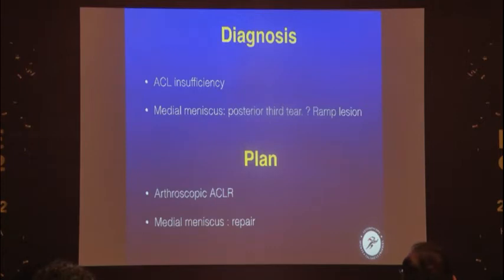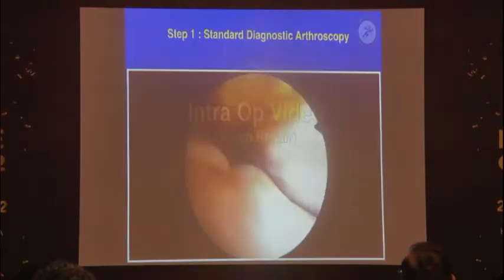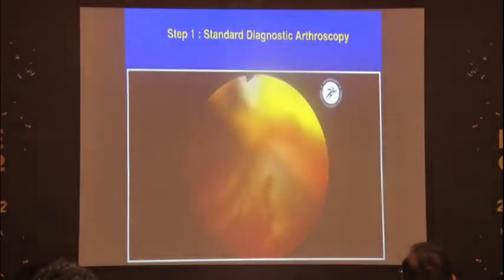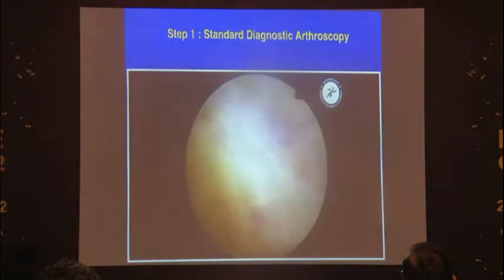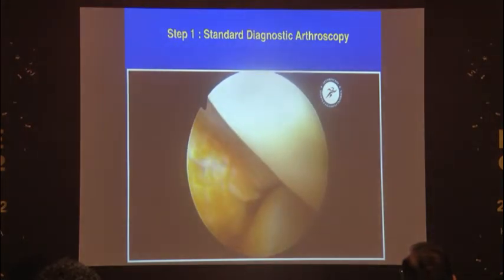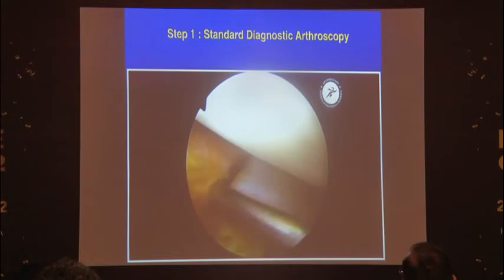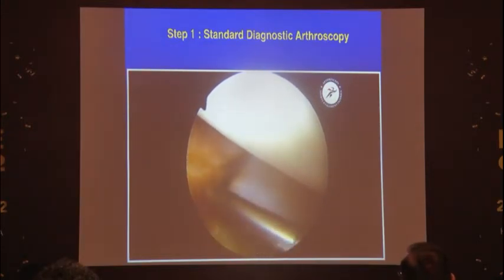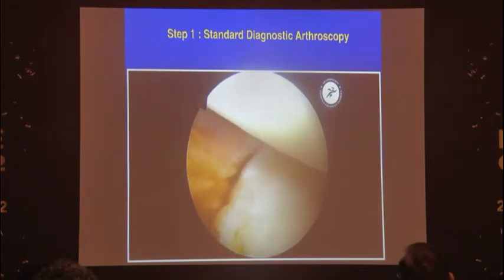The plan was to do an arthroscopic ACL reconstruction with a medial meniscus repair. Step one is to do a standard diagnostic arthroscopy, go into the posterior medial compartment, and have a look at the ramp. Once you extend into it, you can clearly see the meniscus-capsule separation. You can probe it and assess the stability — it was coming way apart, so it's an unstable lesion which should be repaired.